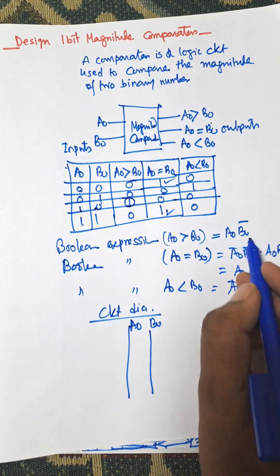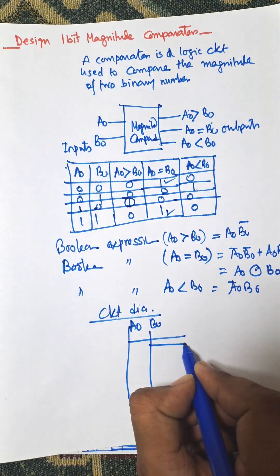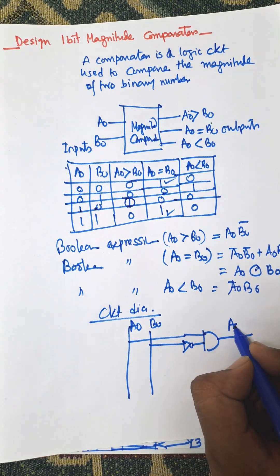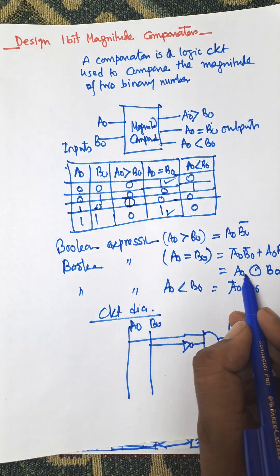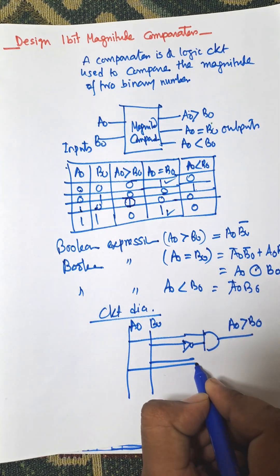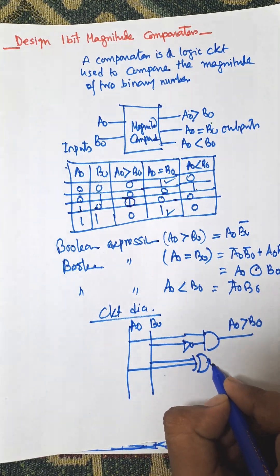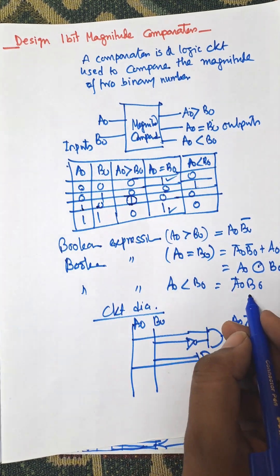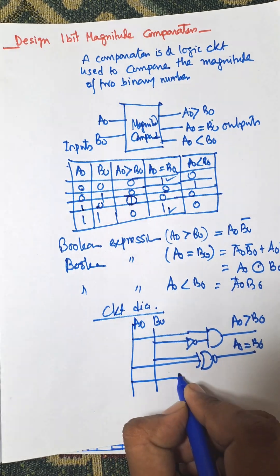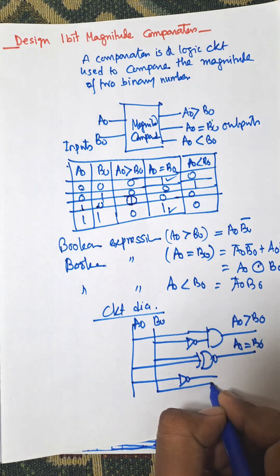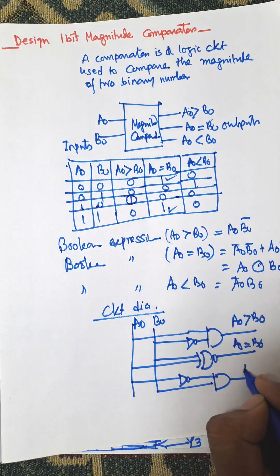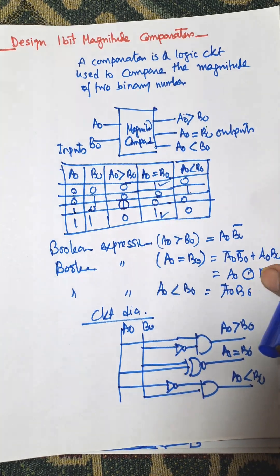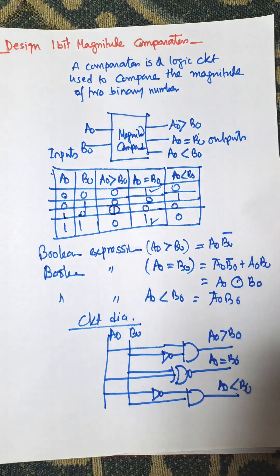Now for the circuit diagram: the first expression a0 AND b0-bar is implemented using an AND gate, giving the output for a0 greater than b0. The XNOR gate gives the output for a0 equal to b0. And finally, a0-bar AND b0 — using a NOT gate and an AND gate — gives the output for a0 less than b0. This is the circuit diagram for the one-bit magnitude comparator.